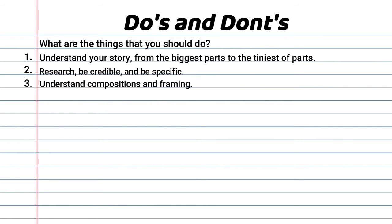Number three: understand compositions and framing — it will help you position your hidden details well. Number four: point out the obvious, but don't make it obvious. What I mean is — intentionally let the viewers see your details, but don't make it too obvious. Let them be the ones to notice it. It's like hide and seek, but you can see the hider's half body peeking from the wall — though sometimes it is okay to make it obvious.